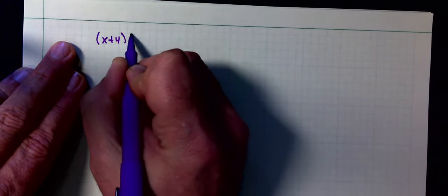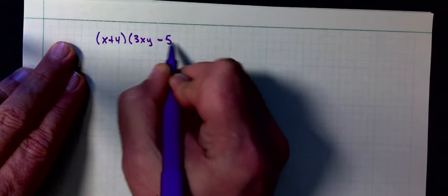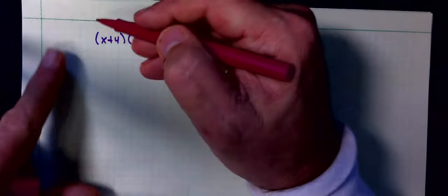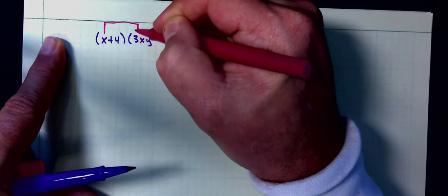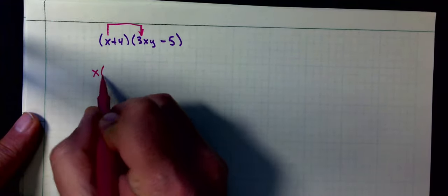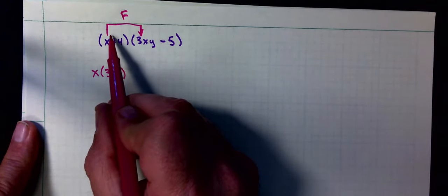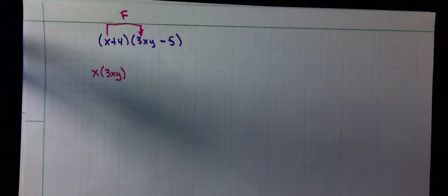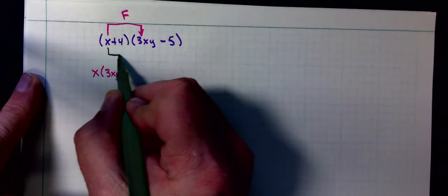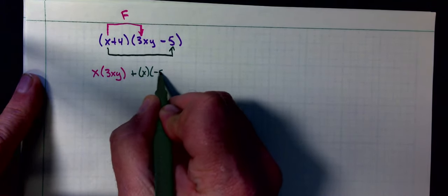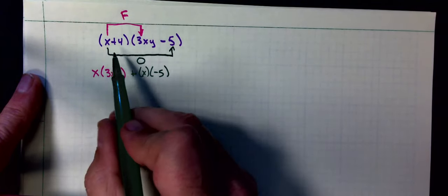I'm going to do a 2x2 and I'm going to give you a shortcut for doing 2x2. So next one to do: x plus 4 times 3xy minus 5. I use distribution. So first thing I multiply is this one right here. That is x times 3xy. Let's label that as an F because it's the first term times the first term. Then I am going to multiply x times the negative 5.